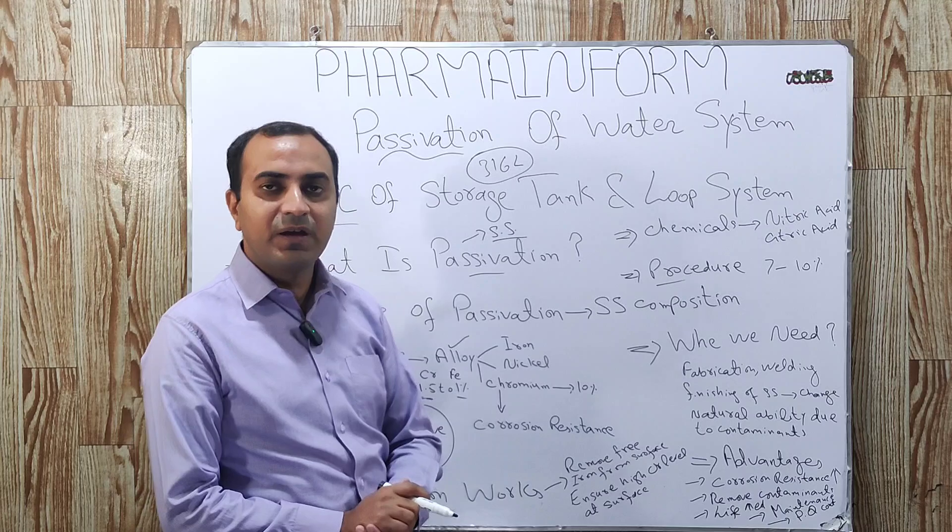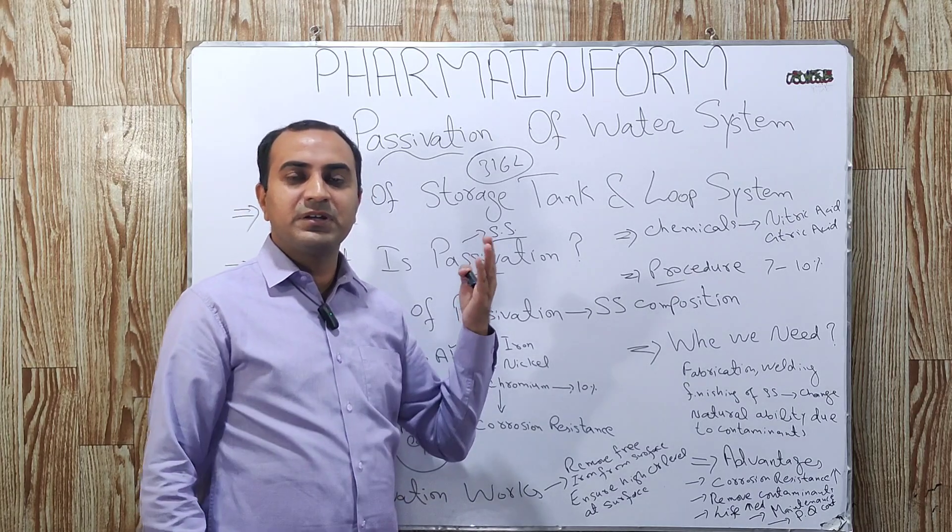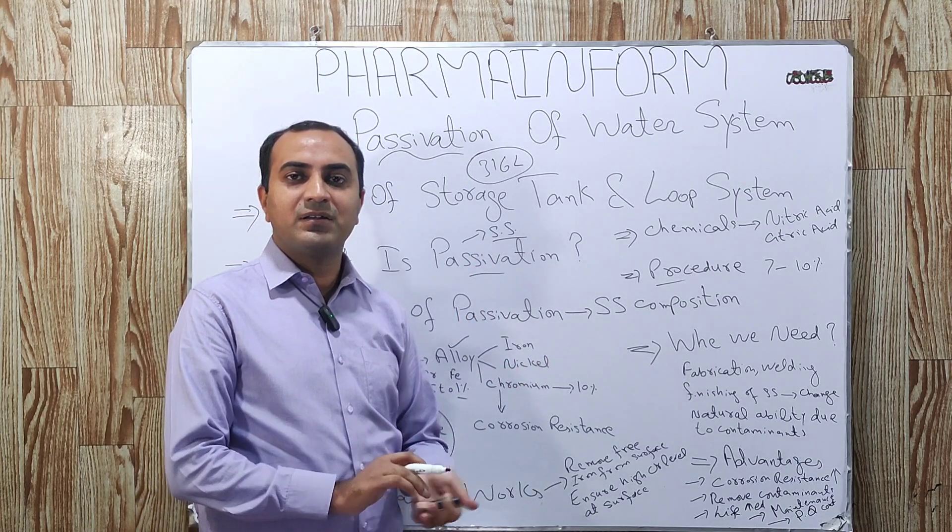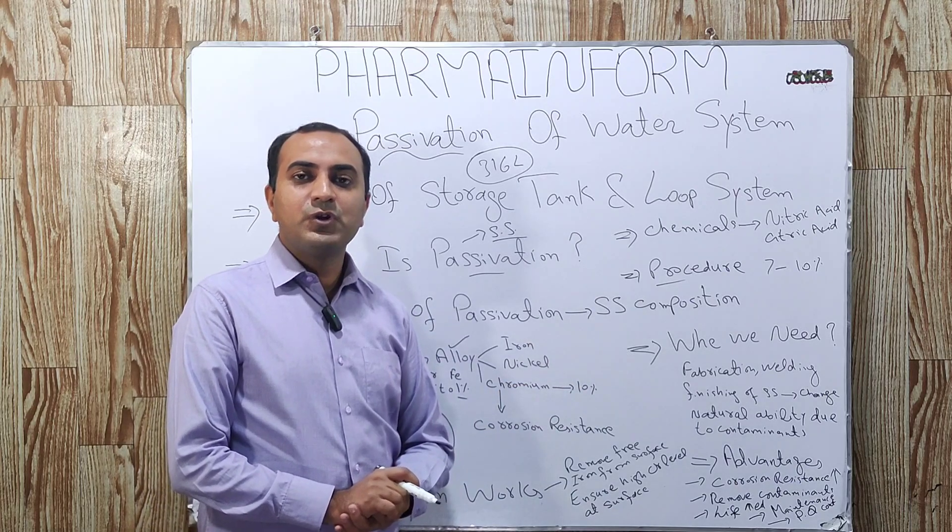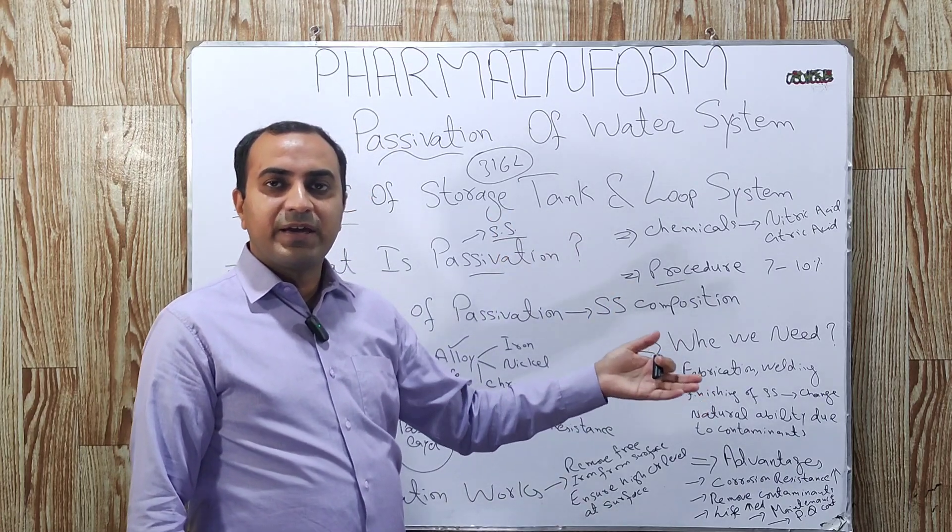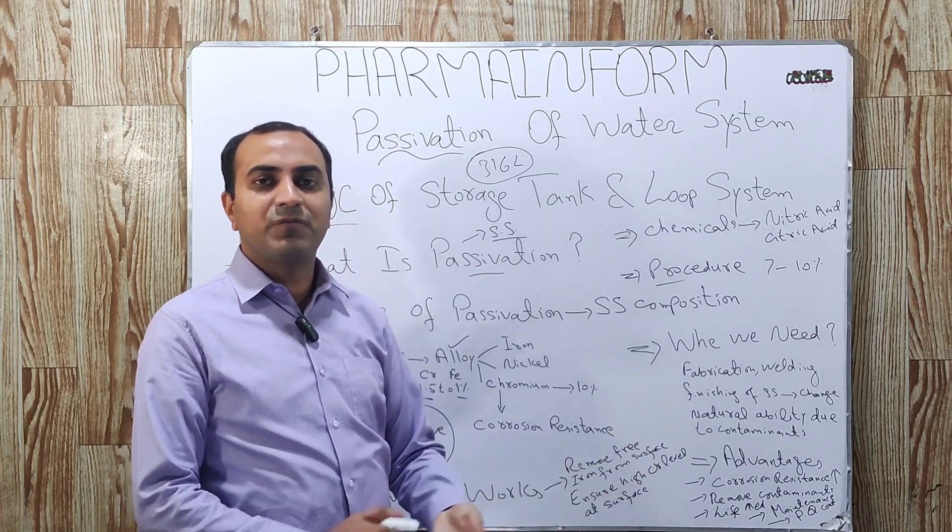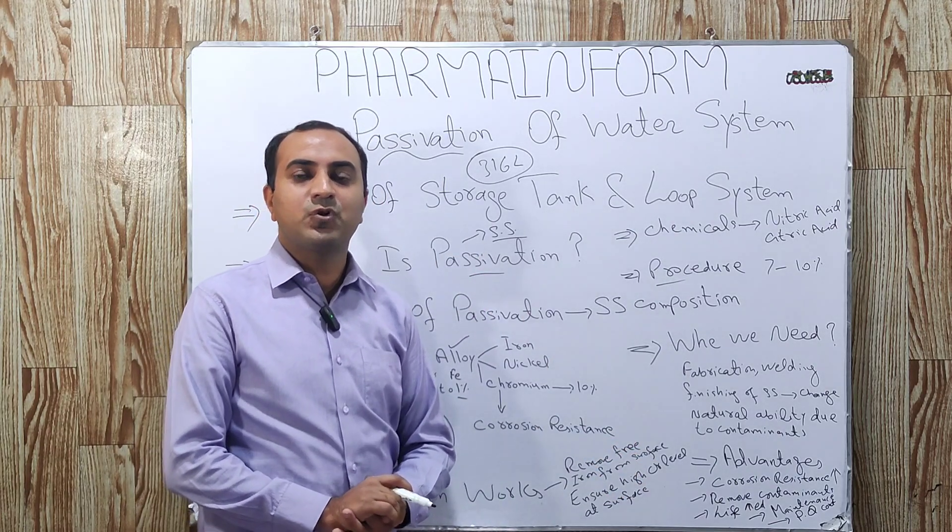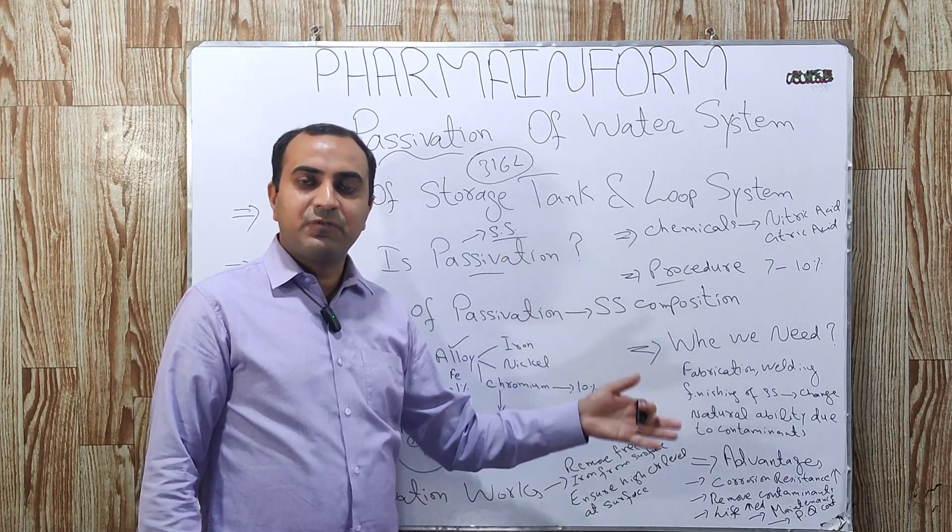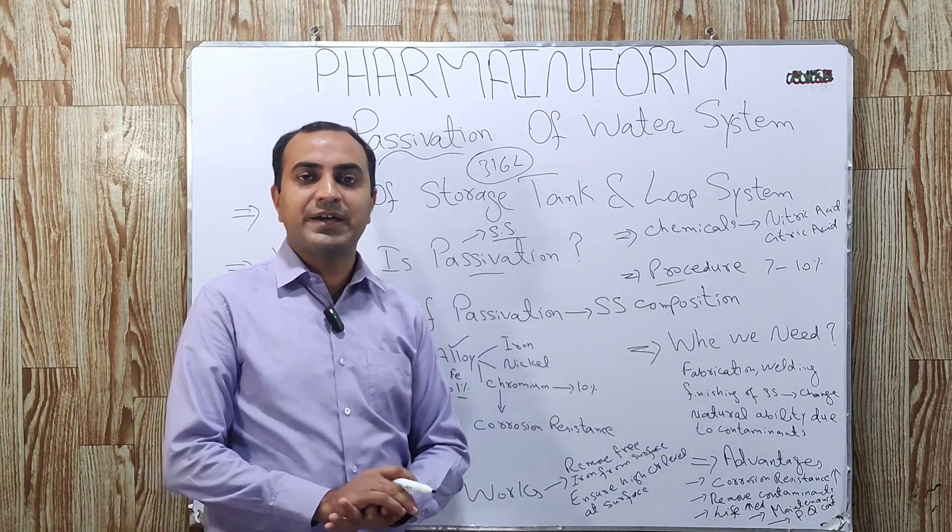After 2 hours, we open each user end and discard the nitric acid solution. Now, we fill the storage tank with the purified water, freshly prepared purified water and again circulate it for 1 hour. After 1 hour, we again check its pH and conductivity.